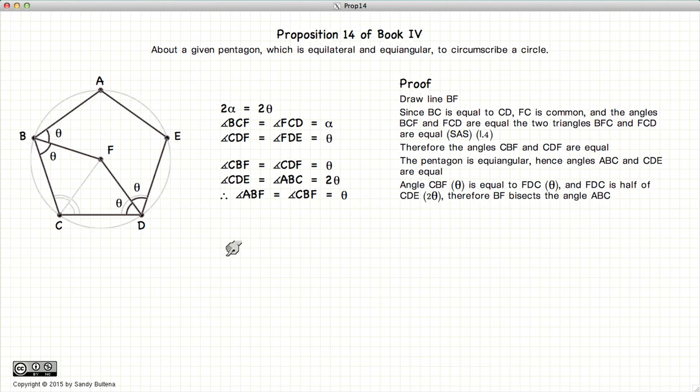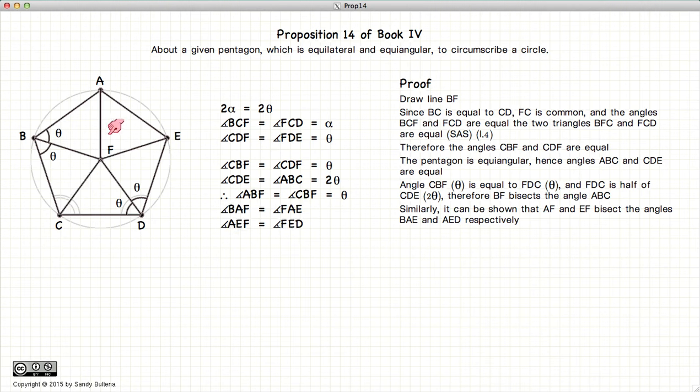And using similar logic we can demonstrate that all of these angles have been bisected by the lines joining from the vertex to the point f.